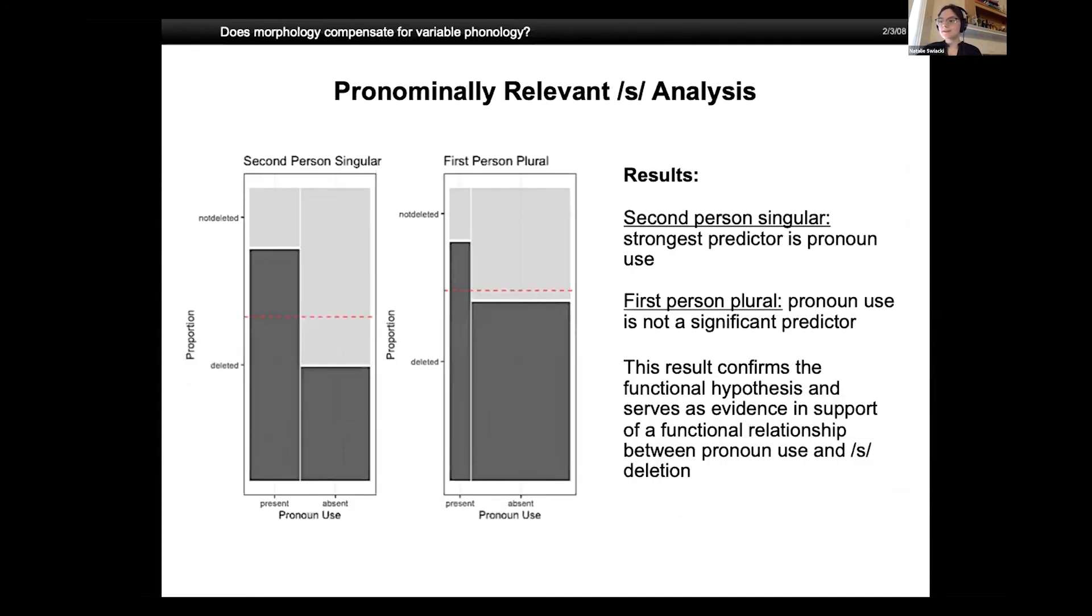Now these next two graphs demonstrate the effect of pronoun use on S deletion for the second person singular and the first person plural verb forms, which is the meat of my study per se. The red line on the second person singular graph is set at 0.56 and the one on the first person plural at 0.65, again representing the respective portions of S deletion for those verb forms. For the second person singular, when a pronoun is absent, S is much less likely to be deleted than when it is present. The same trend is visible on the graph for the first person plural data, but you can see that that distinction is not nearly as strong.